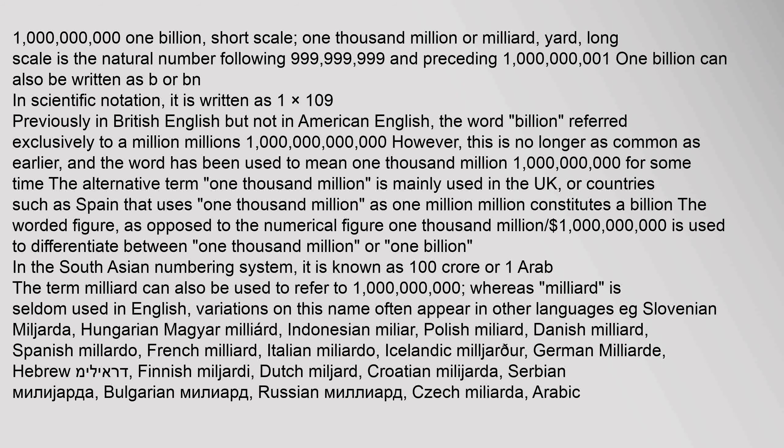1 billion — short scale: 1,000 million or milliard (long scale) — is the natural number following 999,999,999 and preceding 1,000,000,001. It can also be written as 'b' or 'bn'. In scientific notation, it is written as 1 times 10 to the power of 9.